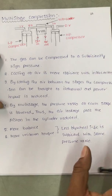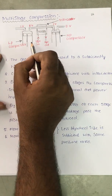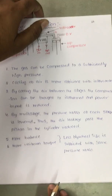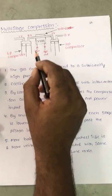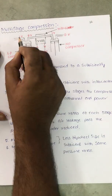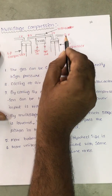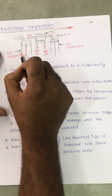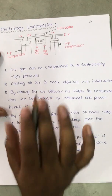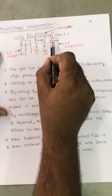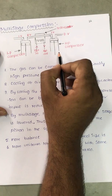In multistage compression, air is compressed in two or more stages — typically two stages, sometimes three. There is an LP (low pressure) compressor and an HP (high pressure) compressor, each with inlet and delivery valves. The inlet valve of the HP compressor is connected to the delivery valve of the LP compressor. After primary compression in the LP compressor, the air is sent to the HP compressor for further compression.